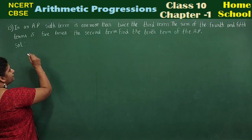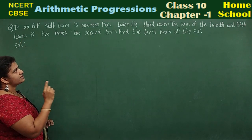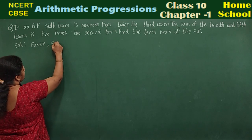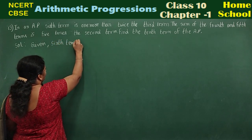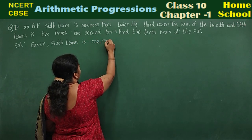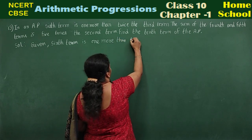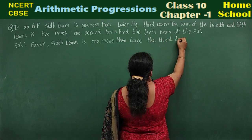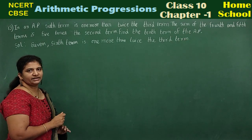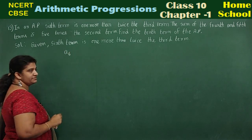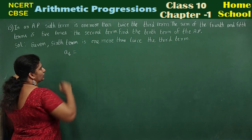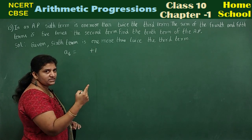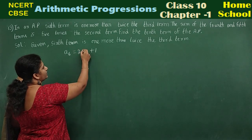Let's start the solution and read the statement again. In an AP, the sixth term is one more than twice the third term. Given: the sixth term — how can you write the sixth term? I can write it as A6. Sixth term is equal to one more, plus one, then twice — two times the third term, A3.